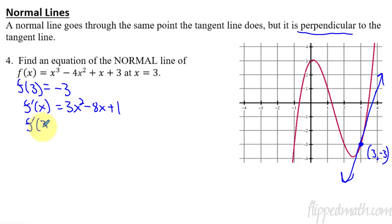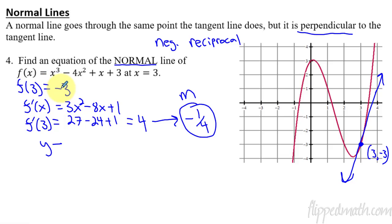Now plug in f prime of 3, and we get 3 squared is 9 times 3 is 27 minus 8 times 3 is 24 plus 1. 27 minus 24 is 3 plus 1 is 4. This is the slope of the tangent line, not the normal line. Please don't get those confused. If it asks for the normal line, what we need to do is take this thing and do the negative reciprocal. Negative reciprocal. If you forgot that, write it down. This is the m we want to use for the normal line, the slope. Alright, so here we go. y minus, what's the y value? -3, so I'll say y plus 3 equals the slope, which is -1/4, and then x minus the x value, which was 3. Alright, there's the equation. So -1/4, so it's at that point, the slope's -1/4.